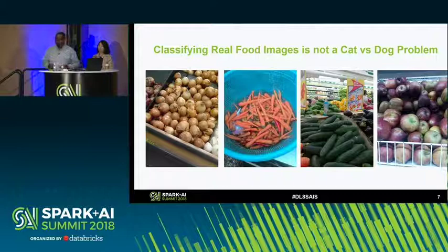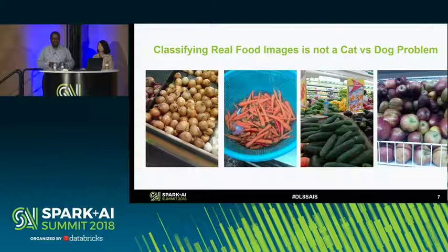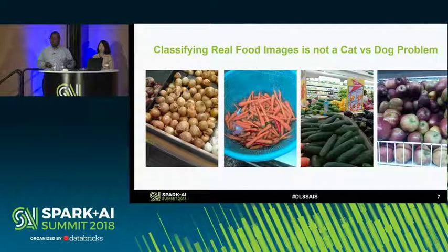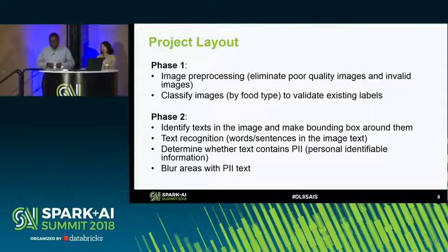Here's an example of the type of images we got. It's not your typical well-centered cat-versus-dog image problem. The first image shows onions with other things on the side, another is a basket of carrots, the third is supposed to be cucumbers but you can see a bunch of other things in the frame, and the last one is apples from a given country. These are messy, real-world images.